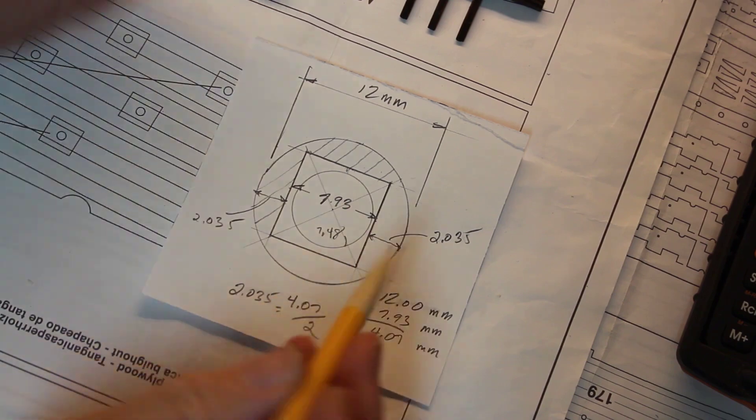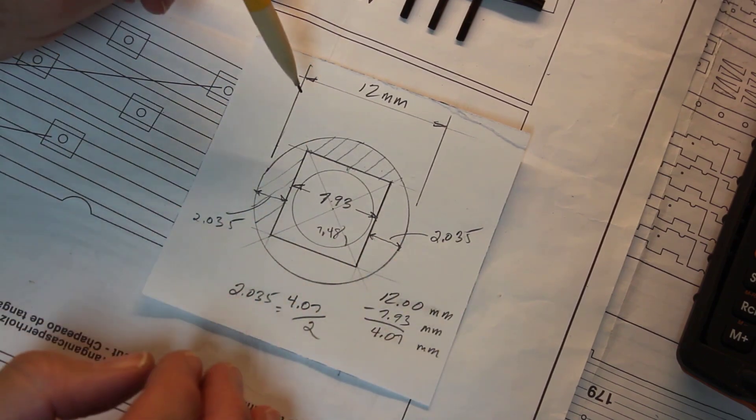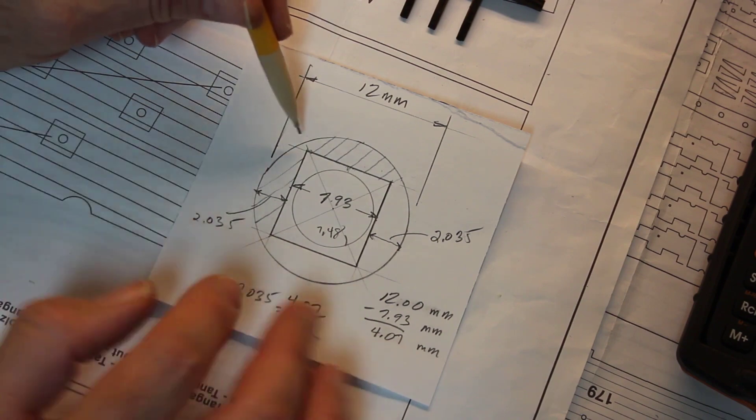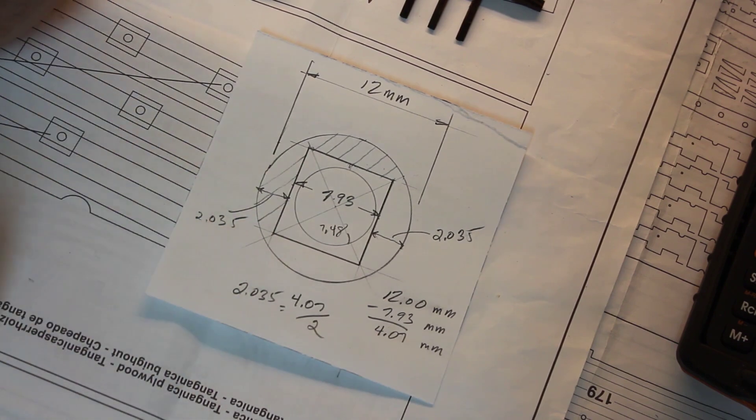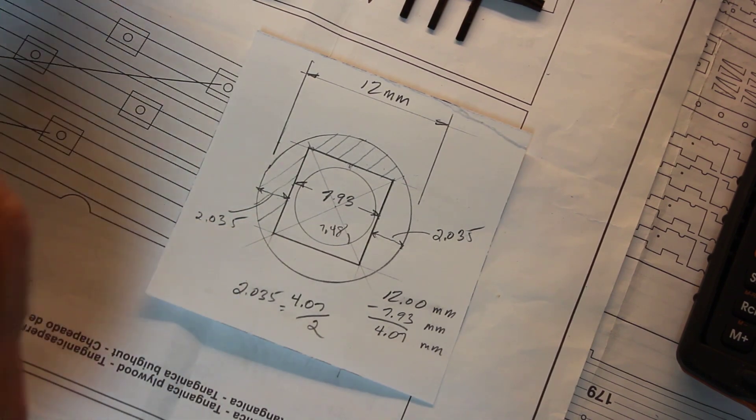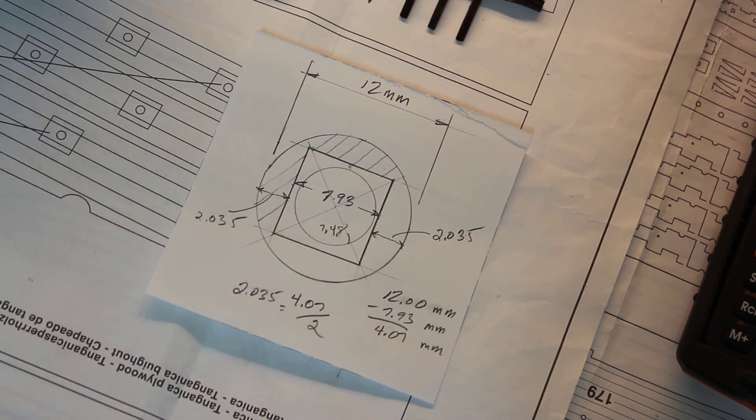So how I calculated this - the dowel is 12 millimeters. If you take the calipers and go around, you may get 12.05, 12.1, 12.2, but that's okay, we're not worried about that.